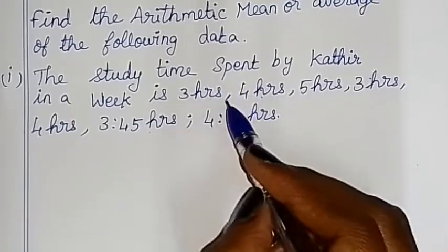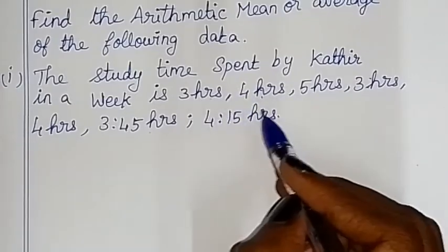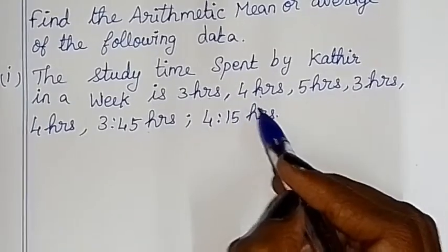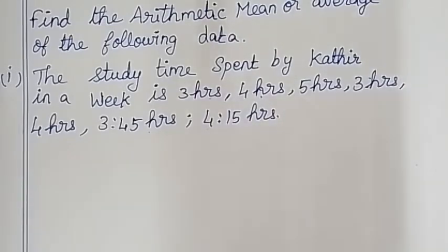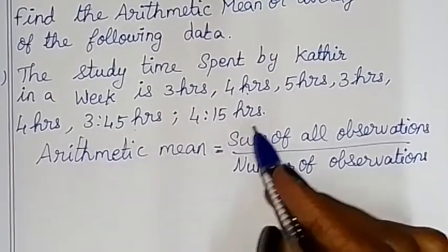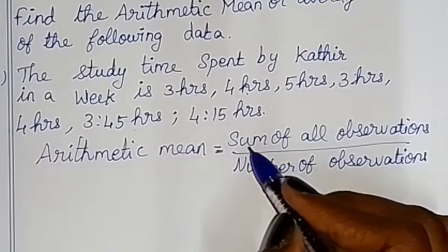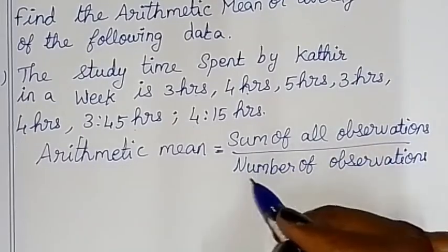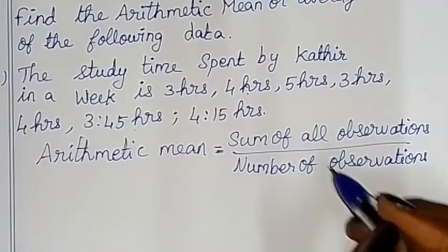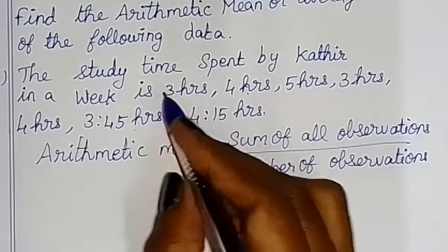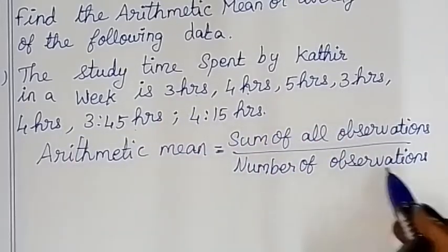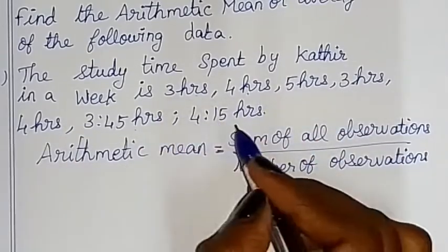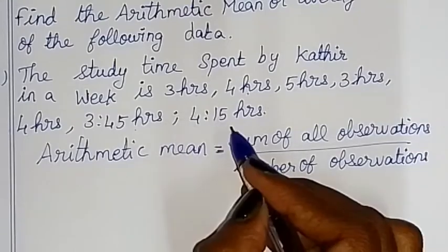So over 7 days, we use the arithmetic mean or average. Arithmetic mean is the sum of all observations divided by the number of observations. How many observations are there? That's all divided.